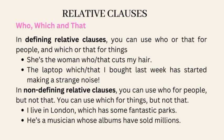The choice between who, which, and that depends on the type of relative clause and whether you are talking about people or things. In defining relative clauses, you can use who or that for people, and which or that for things. For example: 'She's the woman who/that cuts my hair' — defining clause about a person. 'The laptop which/that I bought last week has started making a strange noise' — defining clause about a thing.